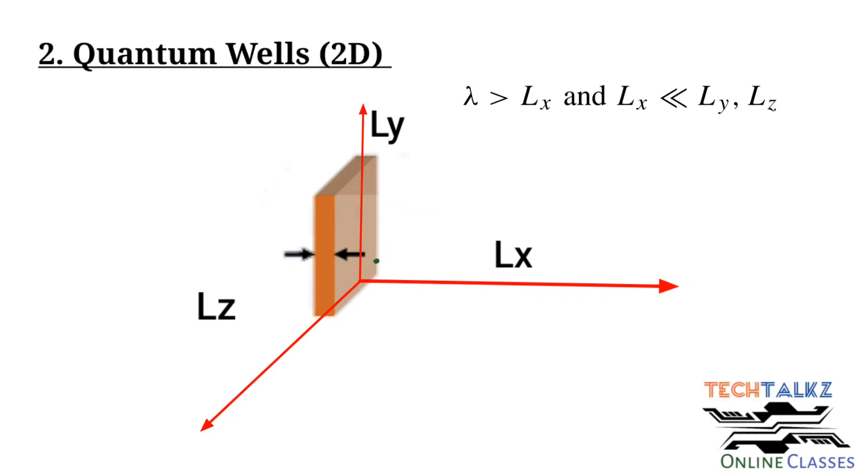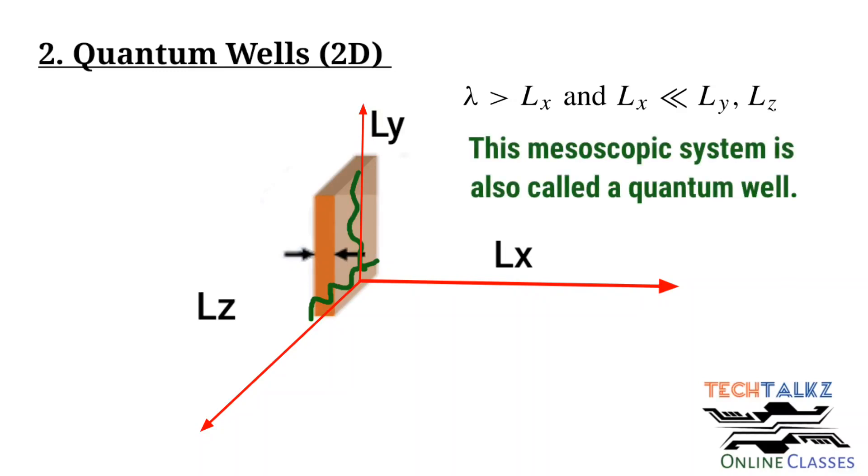And at the same time, electron is free to move across other two axis or through two dimensions. This is 2D semiconductor structure. It is also known as quantum well.